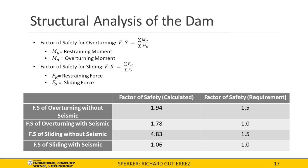Based on the analysis of all forces, we calculated the factor of safety for sliding and overturning. All minimum requirements were gathered from the dam safety department. For overturning, we use the restraining moment over the overturning moment, and for sliding, the restraining force over the sliding forces. The factor of safety was calculated both with and without seismic consideration.